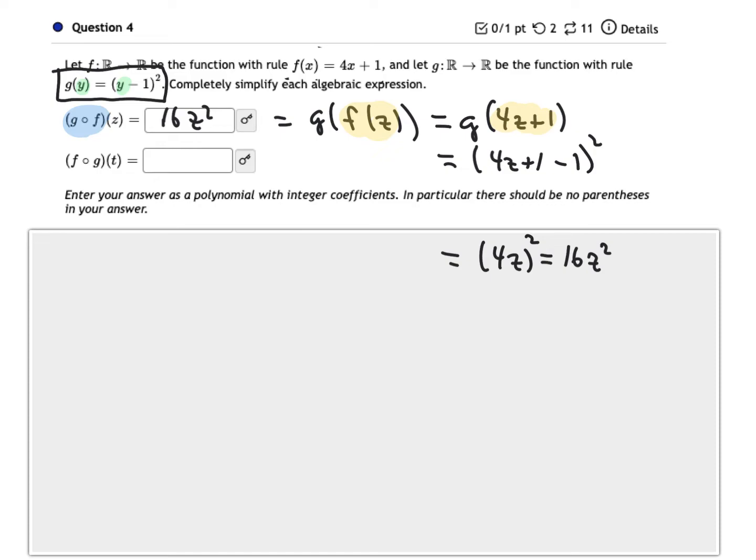So let's do the other one for practice. Here we have f of g. And so again, when we think about evaluating that, I'm going to come down here now. When we think about evaluating that, that means f of g of t.